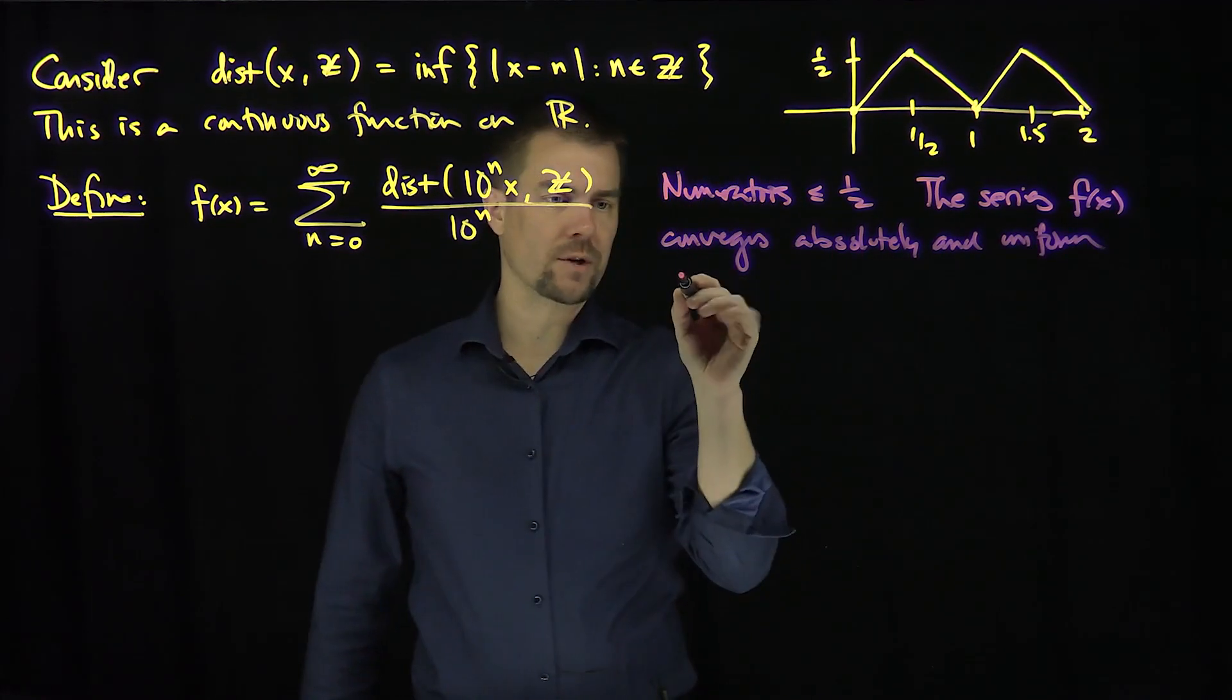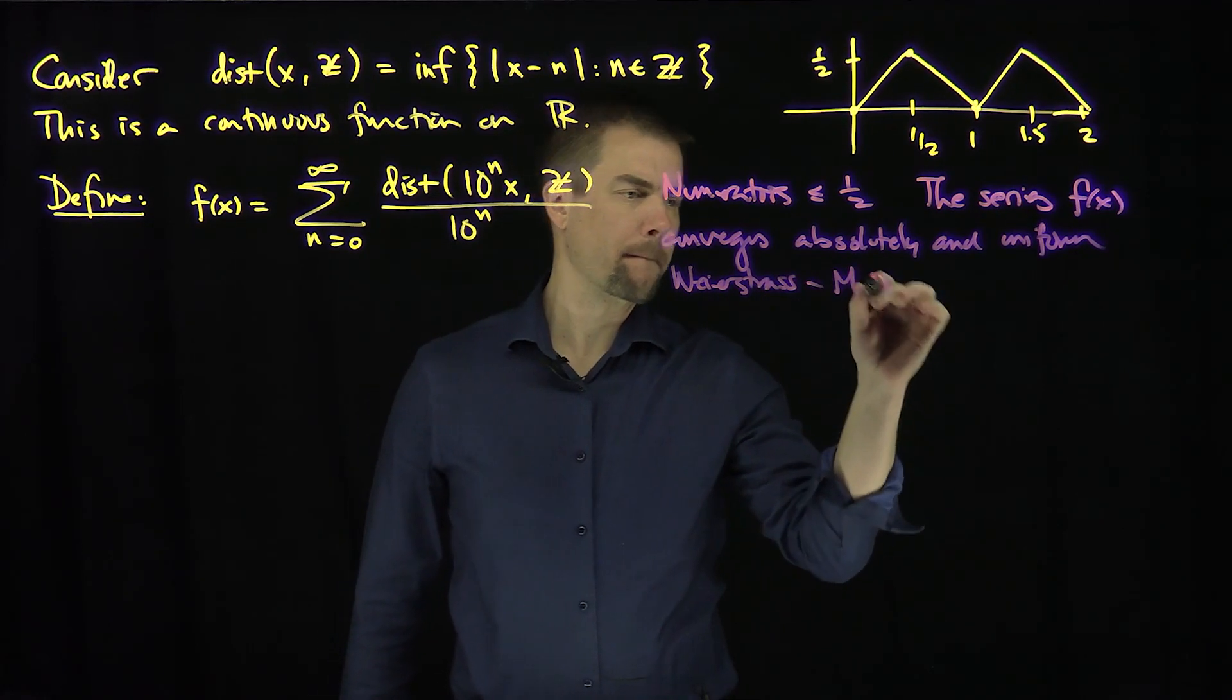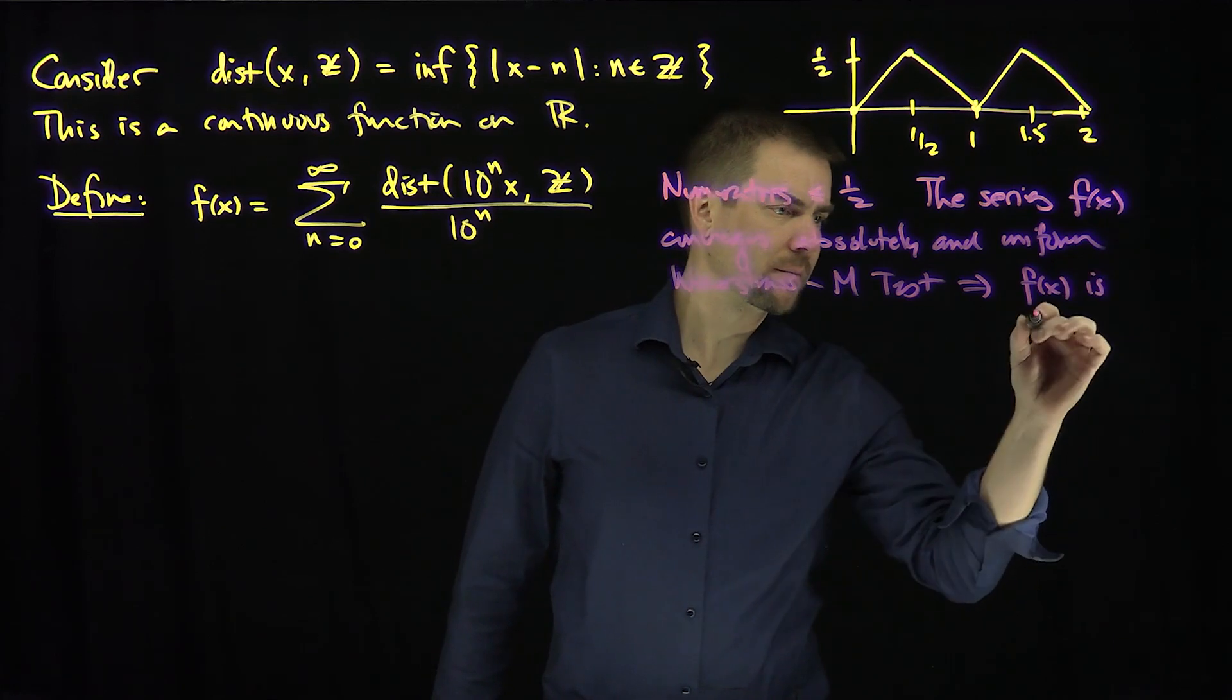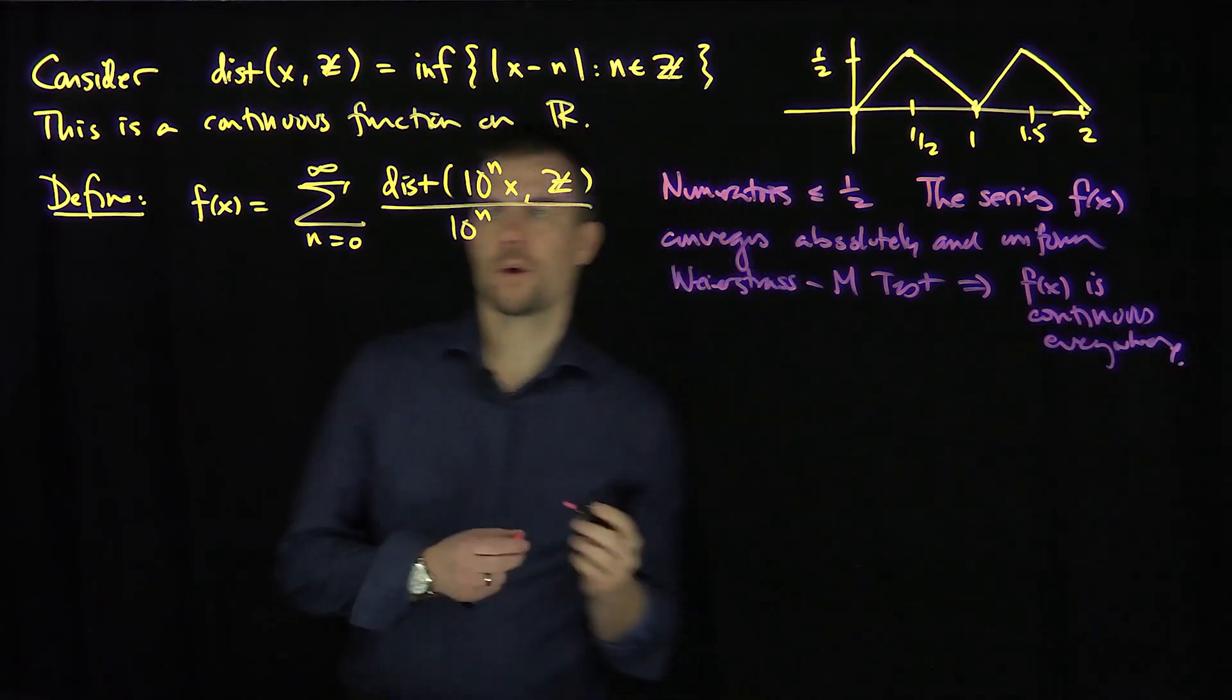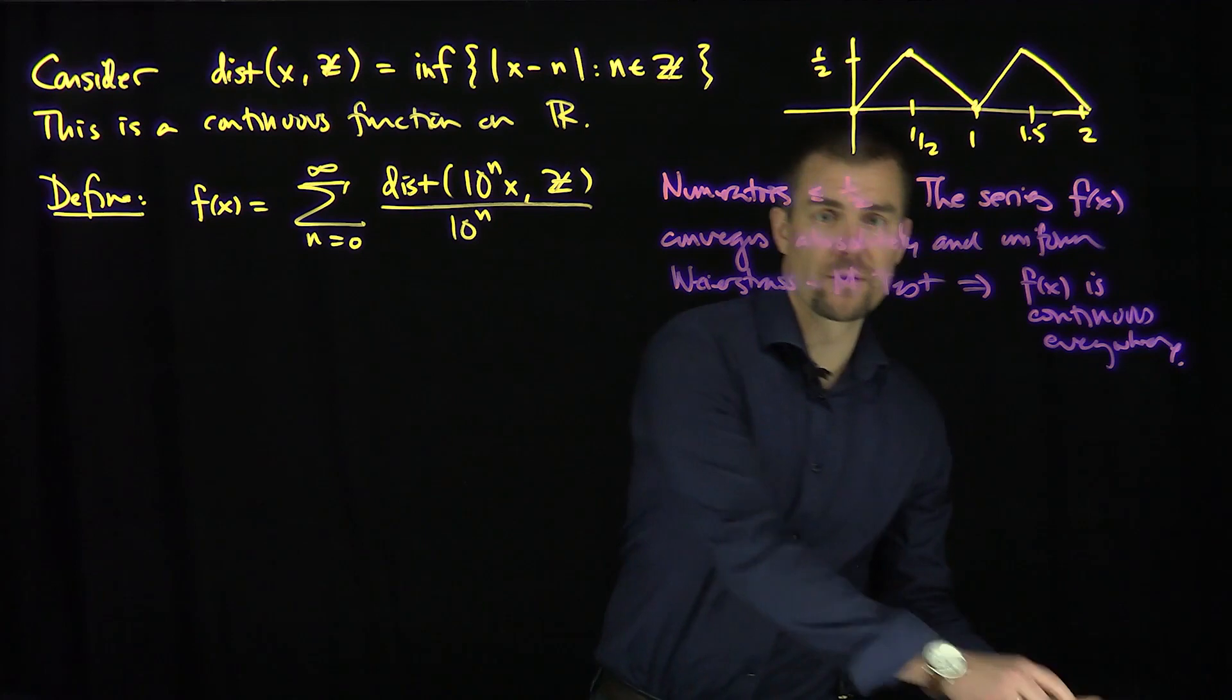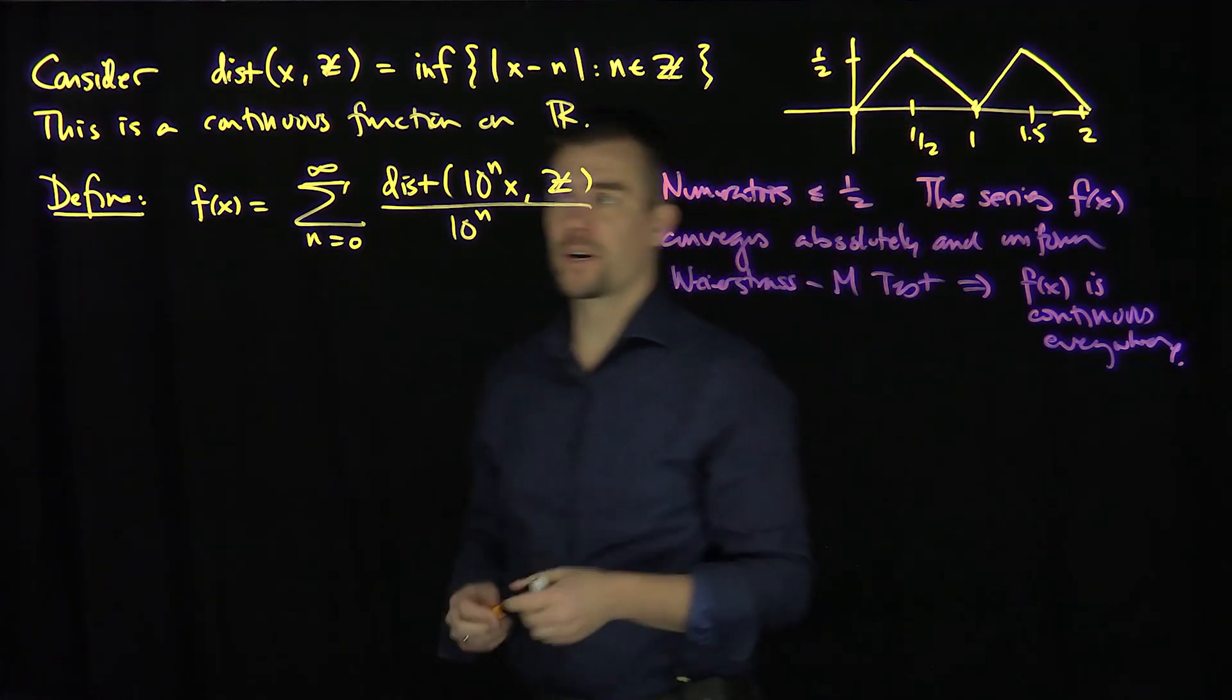And so by the Weierstrass M-test, this implies that f(x) is continuous at every point. So f(x) is a continuous function everywhere. That's just a consequence of the absolute and uniform convergence and the Weierstrass M-test.